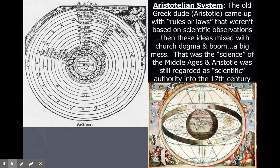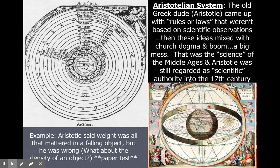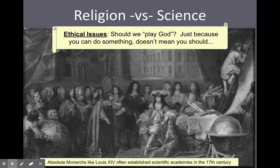Aristotle, living back in classic Greek times alongside Ptolemy, came up with rules and laws that weren't based on scientific observations — just his ideas and things he saw, not scientific calculations. These ideas mixed with church dogma, and that was the so-called 'science' of the Middle Ages. Aristotle was still regarded as a scientific authority even into the 1700s — when people thought about the smartest person who ever lived, they thought Aristotle. The Renaissance promoted antiquity, and lots of Aristotle's ideas were being disproved by Galileo and Copernicus as we totally changed the system of the old world to the new one.